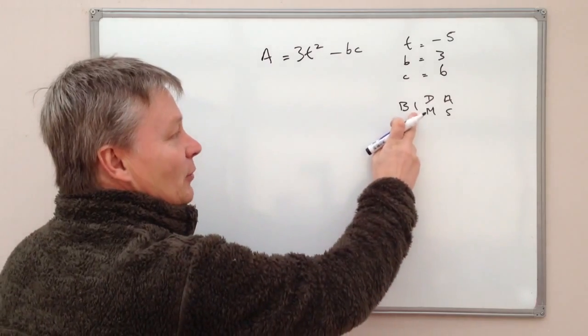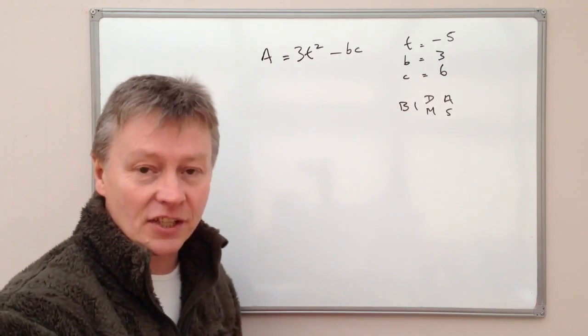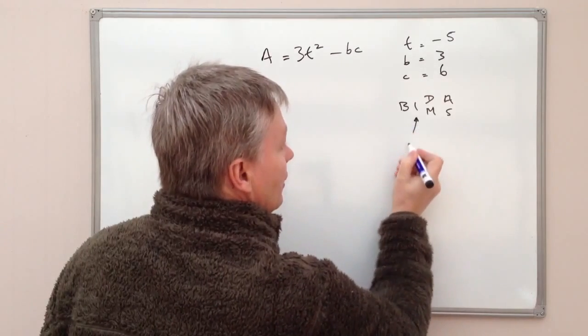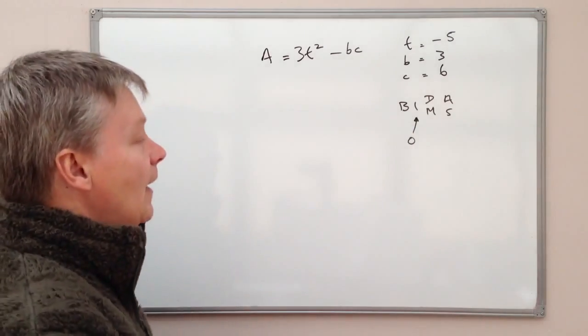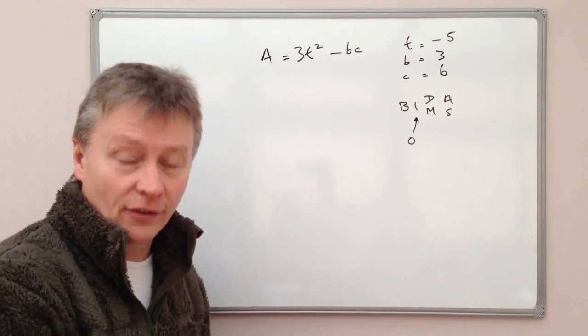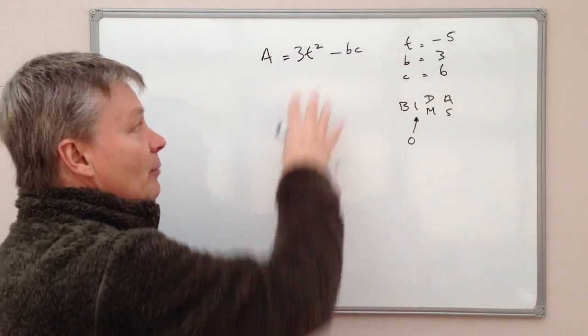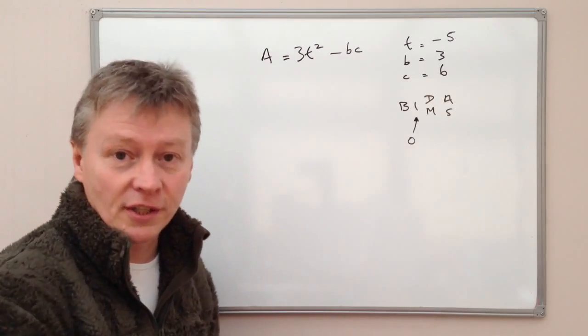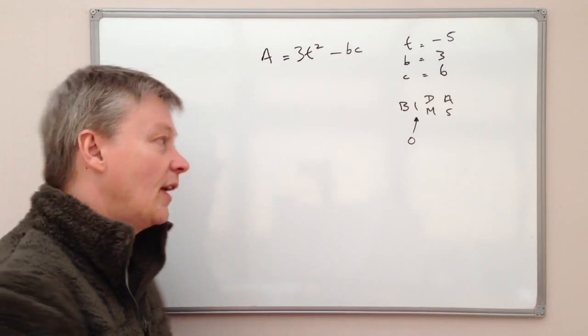The second thing that we deal with is the index or the order. Some people call it the order, and basically it means this squared sign on this formula or the power of a particular term. So it might be T cubed or T to the power of 6 or something like that.